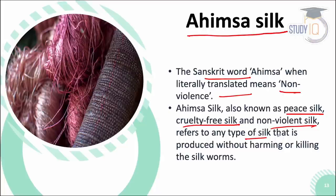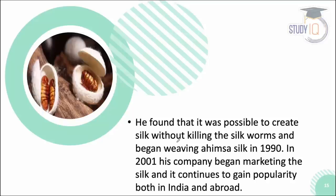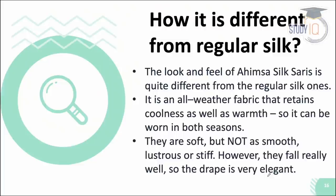Ahimsa silk is also known as peace silk or cruelty-free non-violent silk, produced without harm to the silkworm. Credit for commercializing Ahimsa silk goes to Kusuma Rajaiah, a 60-year-old government officer from India who holds a patent and trademark for it. He started his company around 1990 and popularized it both in India and abroad.